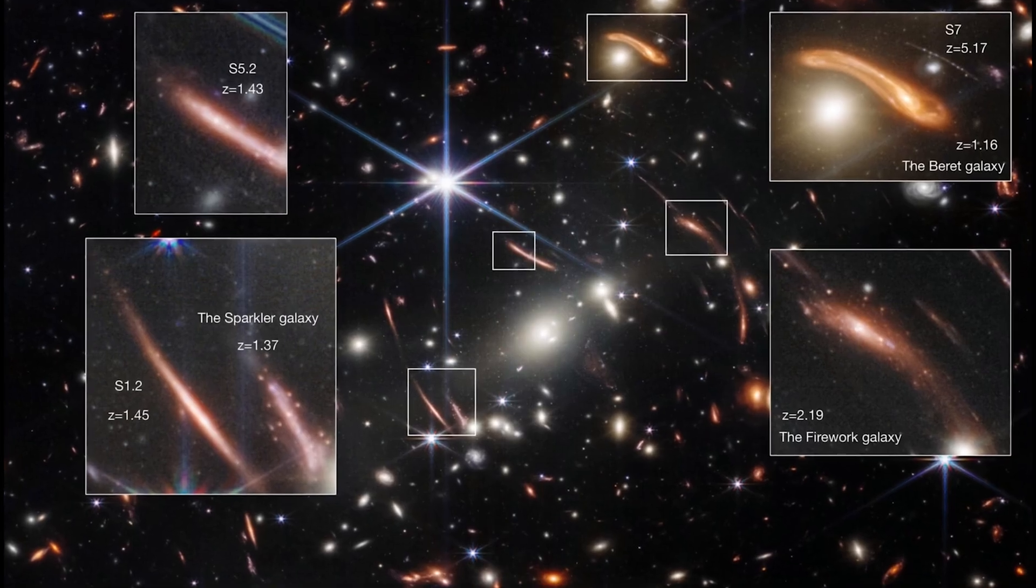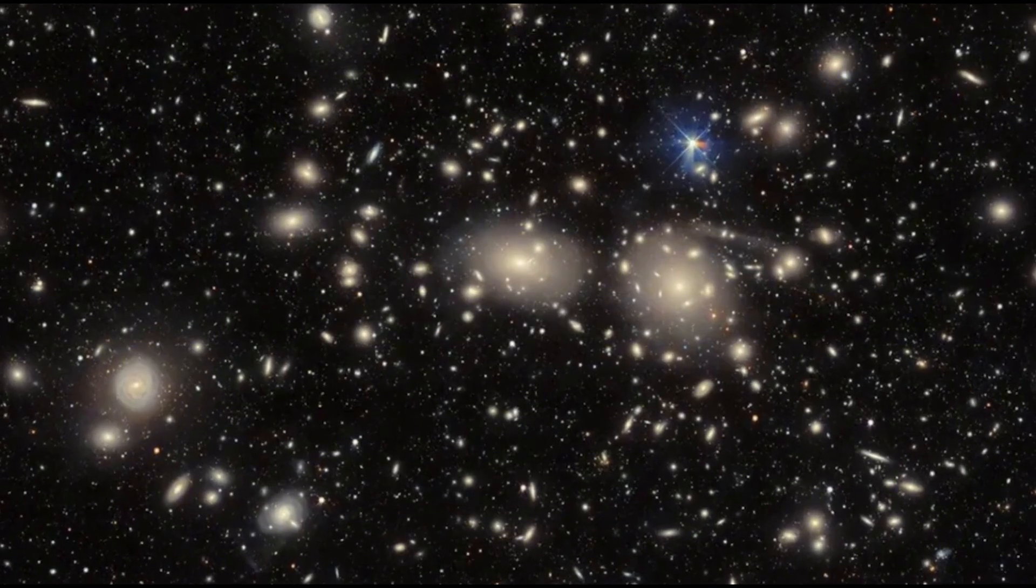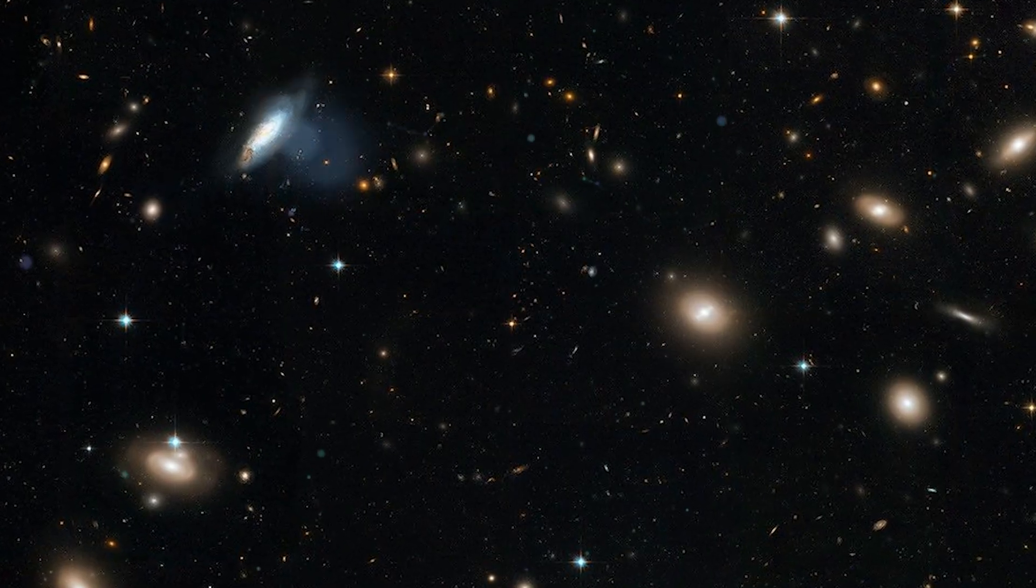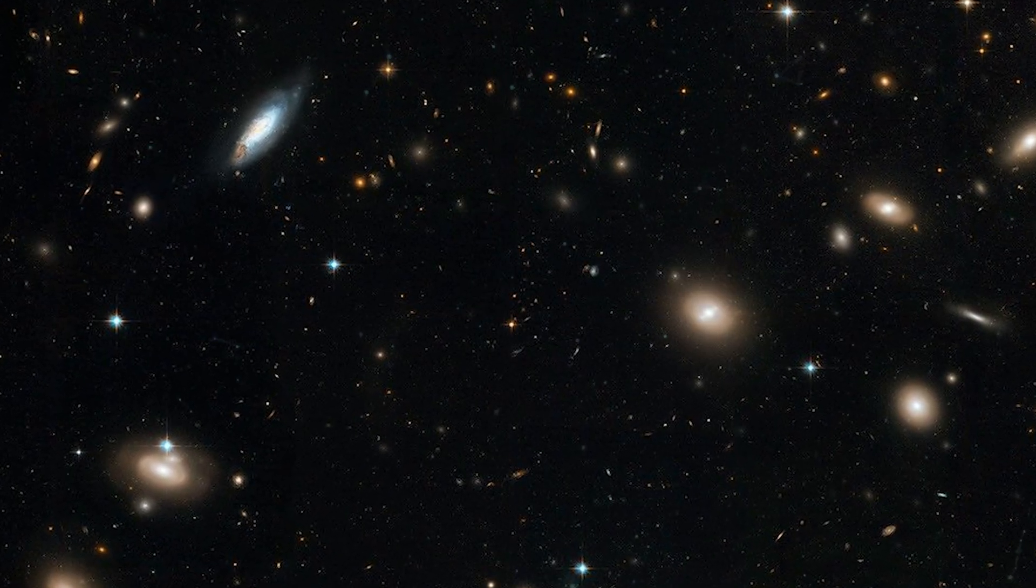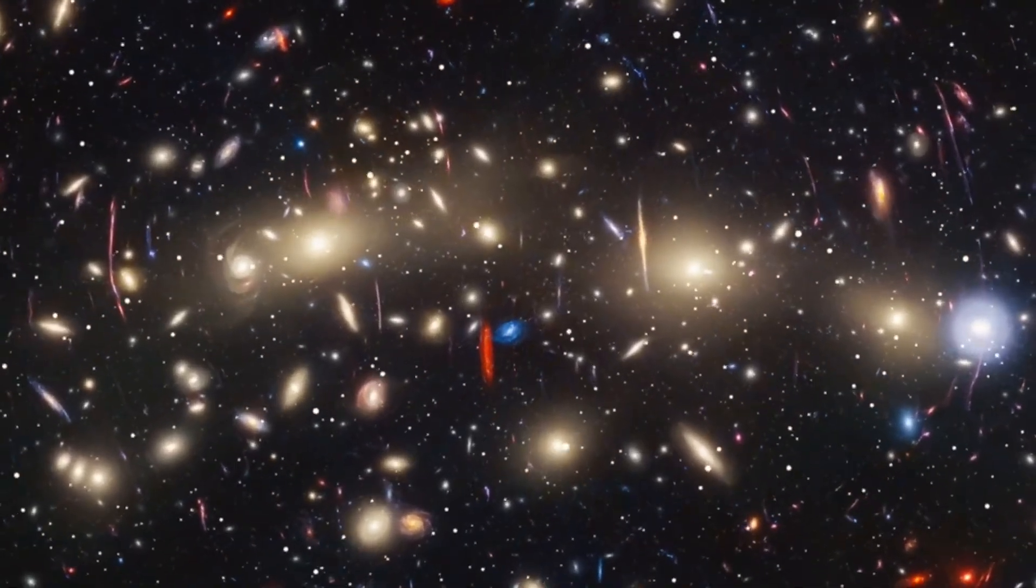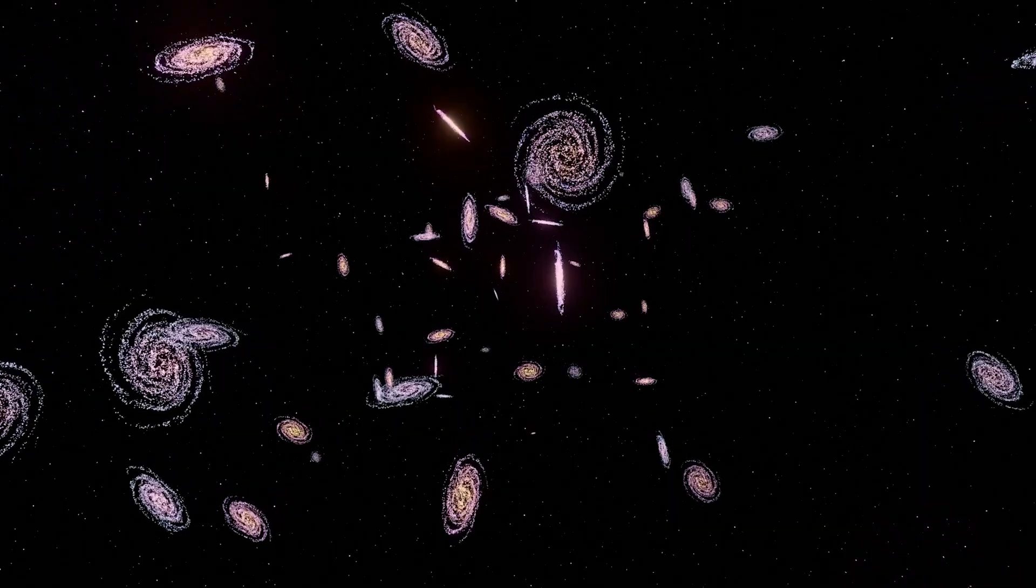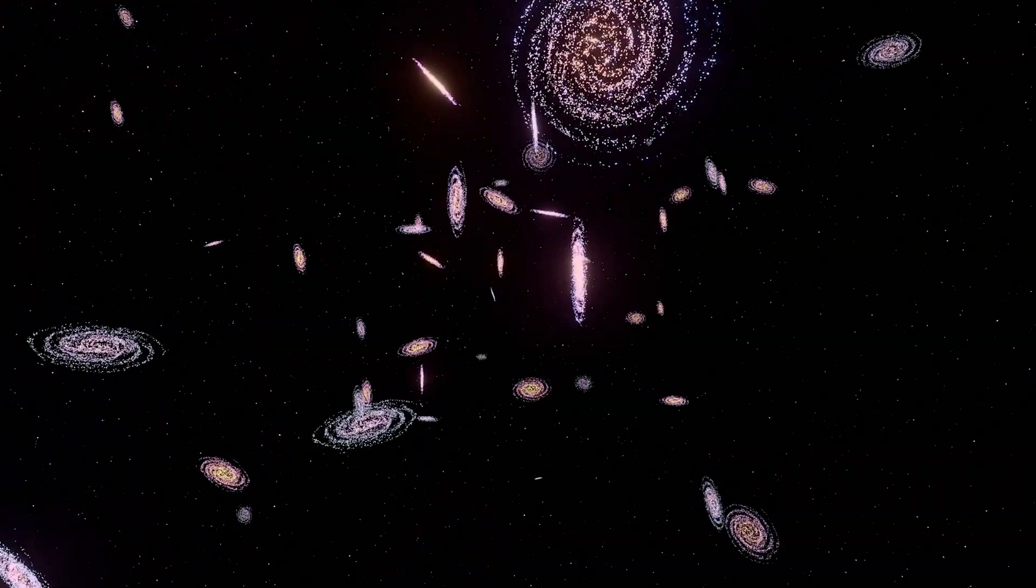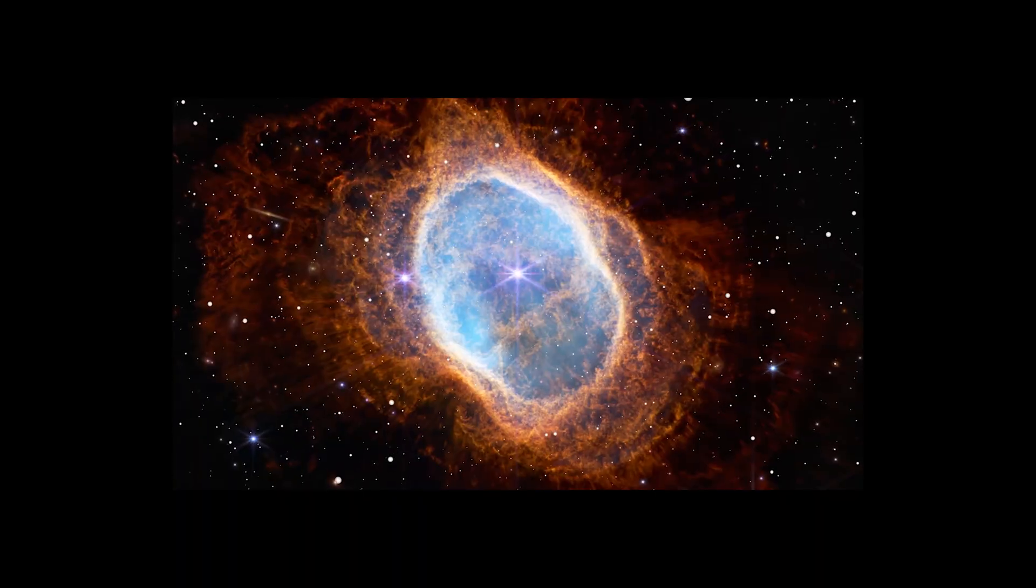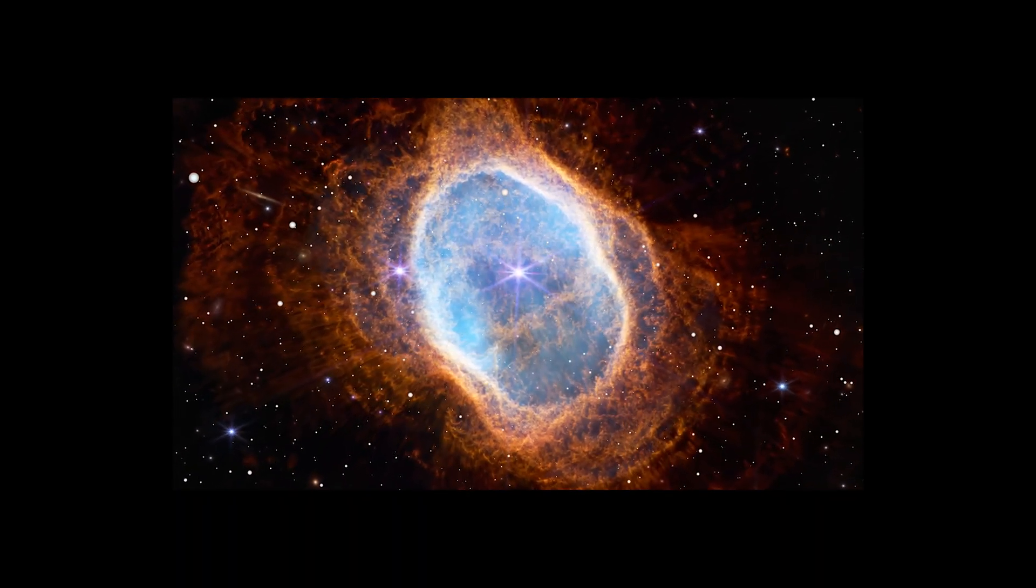These galaxies are not isolated. They form a protocluster, a group that astronomers believe will eventually grow into something like the Coma Cluster, one of the largest and most massive galaxy clusters in the modern universe. This discovery is stunning for two reasons. First, it shows that galaxies were already grouping together into large-scale structures far earlier than expected. Second, it suggests that galaxy evolution can be much faster and more dramatic than our models predict.